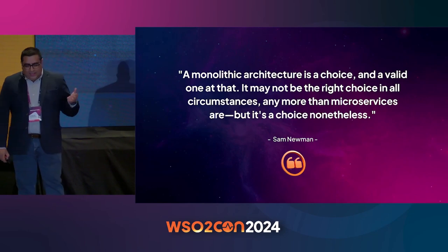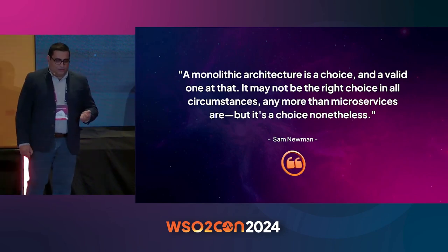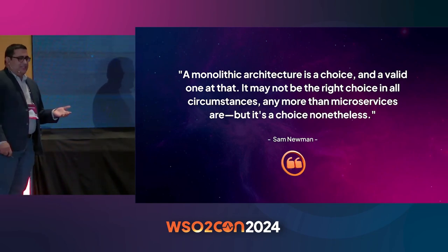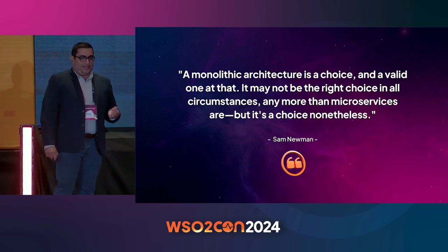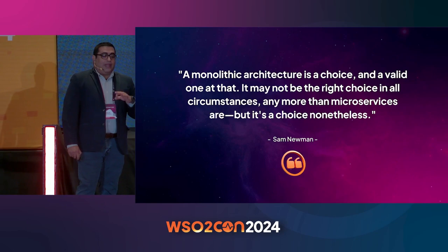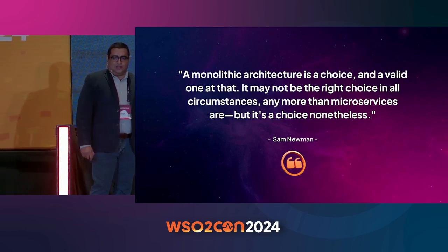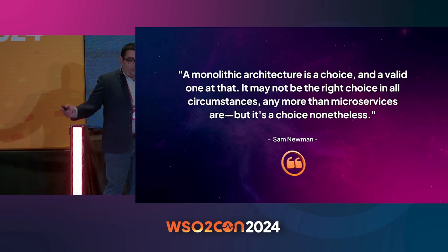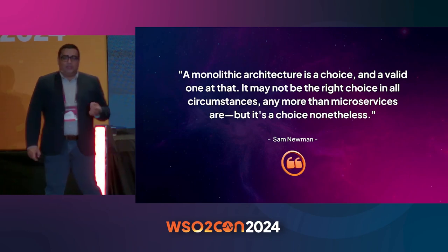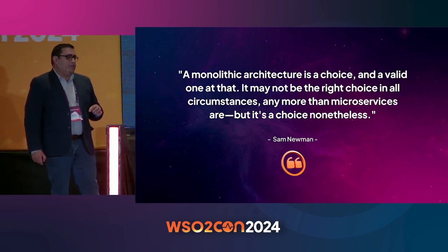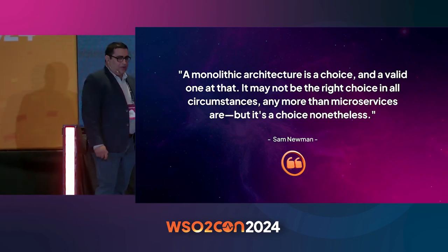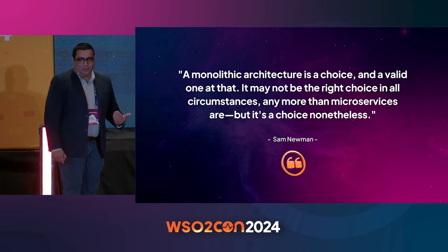Here's a very nice quote from Sam Newman, who has written several books about microservices. He says: 'A monolith architecture is a choice and a valid one at that. It may not be the right choice in all circumstances, any more than microservices are, but it's a choice nonetheless.' What he's trying to say is that while microservices are really good, don't forget that a monolith is also a viable option and is still valid today.